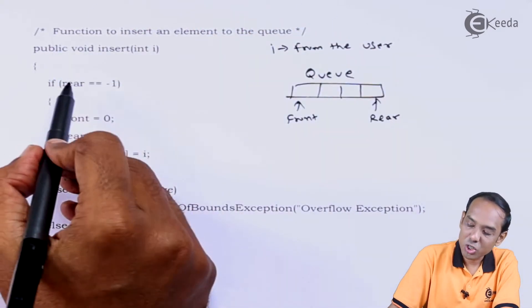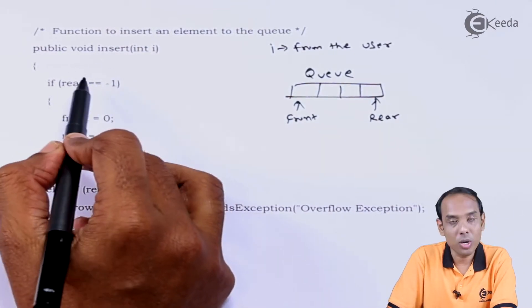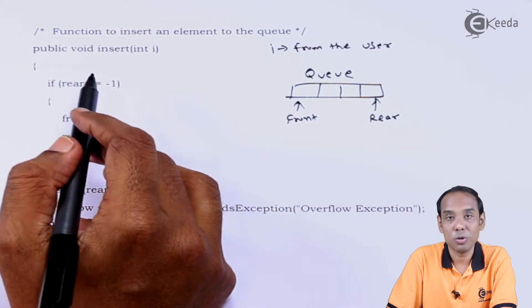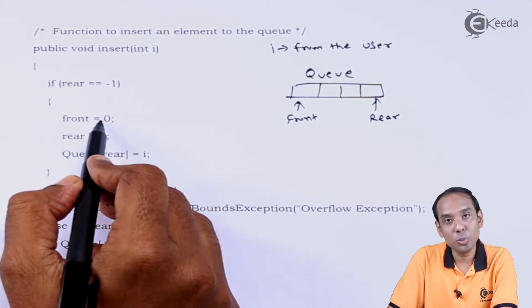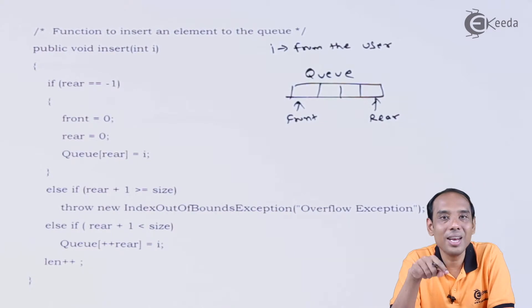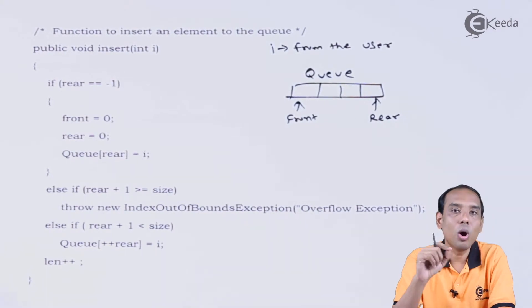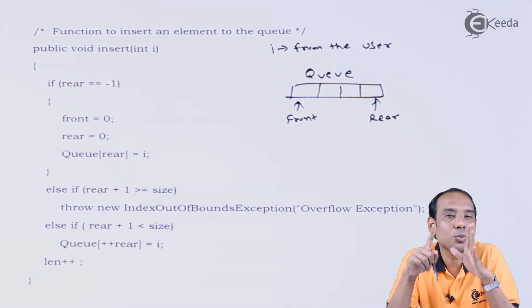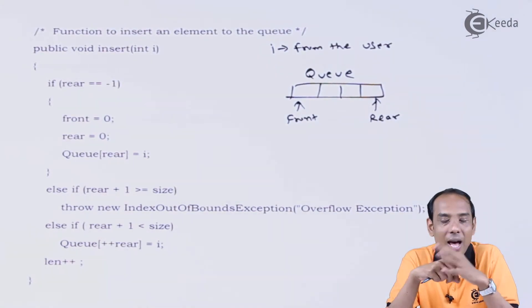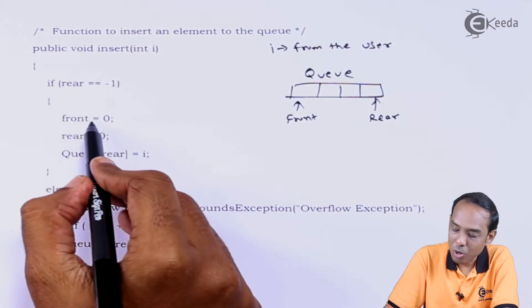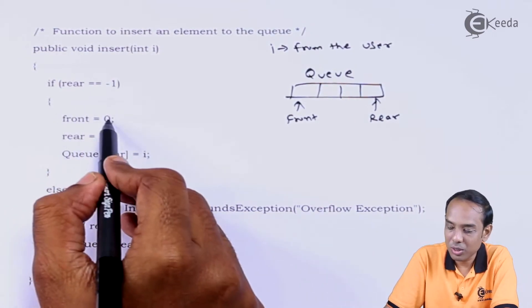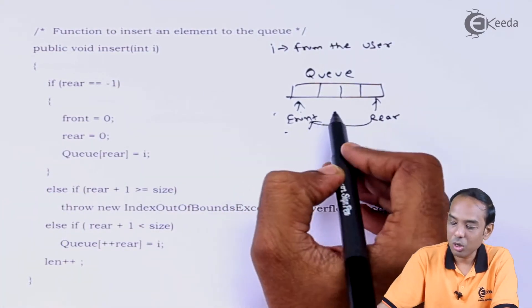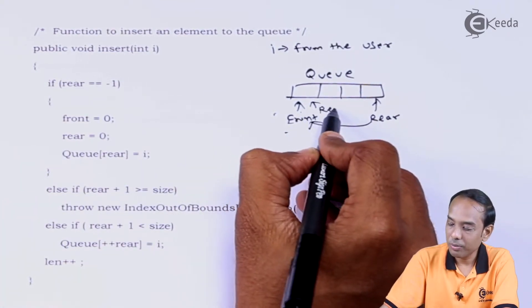We will check the first condition: if rear equals minus one, it means the queue is empty, so we are going to forcefully make front equal to zero and rear equal to zero. Both front and rear then point to position zero, which is the first position in the queue array.